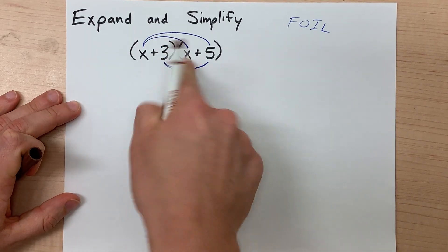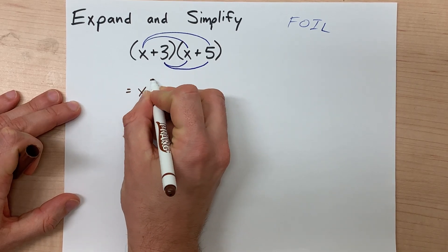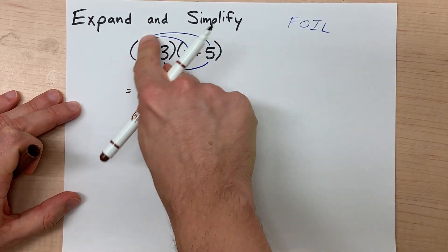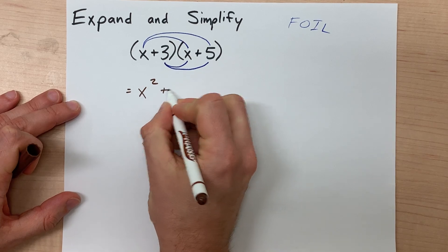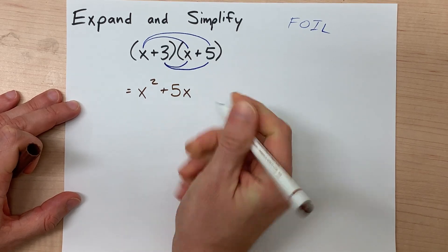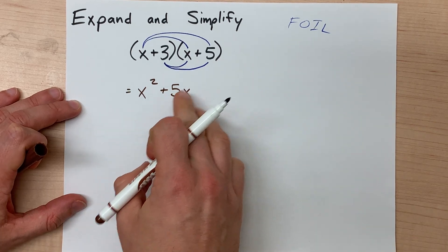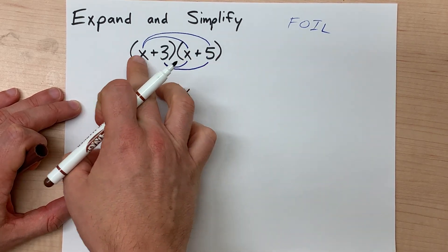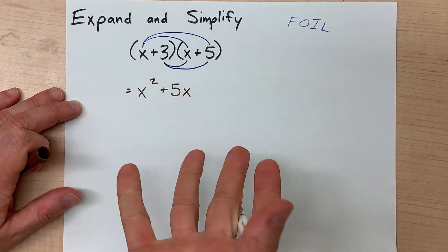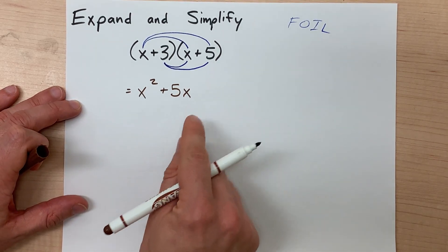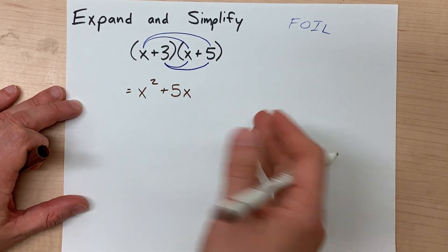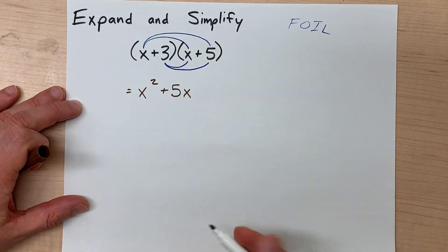x times x is going to give us x squared. x times positive 5 will give us positive 5x. You don't know what number x is, so you can't multiply 5 by that number. You don't know what it represents right now. All you can do is show that they multiply by each other by writing 5x.